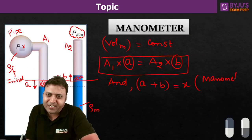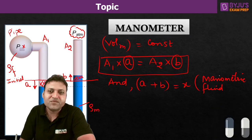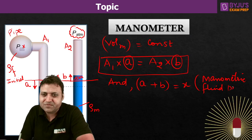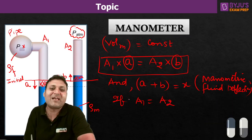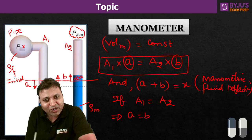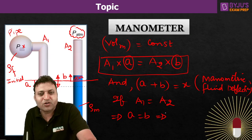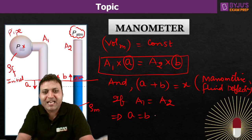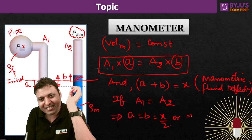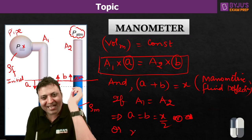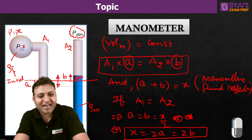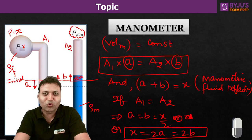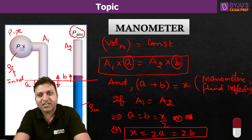X is the manometric fluid deflection due to attachment of the left limb to the pipe. If A1 equals A2 — if the area of the left limb and right limb are the same — then A will equal B, which means A equals B equals X divided by 2 each. Or we can say X equals twice A or twice B. That is how we find out the manometric fluid deflection if the deflection in either limb is given and we know the areas of both limbs.